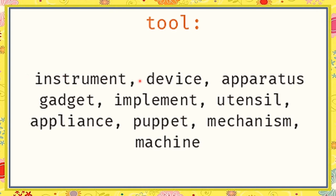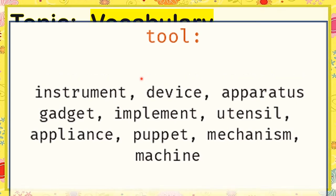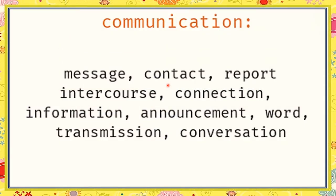Examples of devices or tools that we use in communicating with other people are mobile phones, computers, iPads, and tablets. Now let's proceed to the third word, which is communication. Communication means message, contact, report, intercourse, connection, information, announcement, word, transmission, and conversation. So communication means message through contacting or conversing or talking with other people.